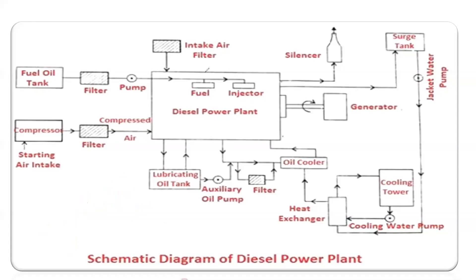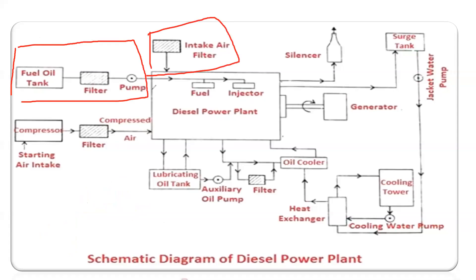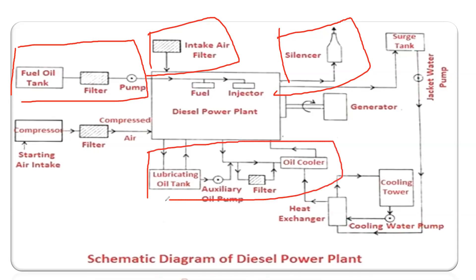In the working, we see different components. First is the fuel supply system, then the air supply system — that is the air intake system — then the exhaust system which is used as a silencer, and then the lubricating oil pump. In the lubricating oil pump, a lubricating oil tank is used, then a filter, and after filtration, the oil cooler is used.